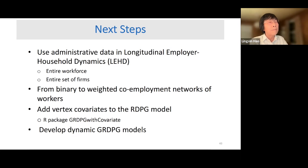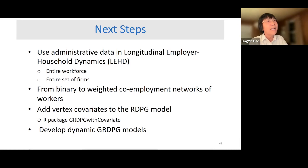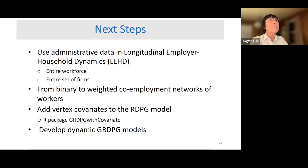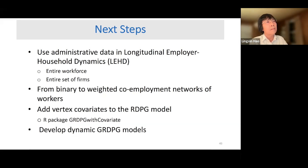Methodologically, there is more work to do. One immediate question is why use a binary network when the co-employment count is non-binary. We binarize for parsimony and because we have the central limit theorem for binary RDPG — the limiting behavior is known. For weighted graphs (e.g., Poisson distribution instead of Bernoulli), we are still working on the theoretical proofs. We also have work on adding vertex covariates to the RDPG, with a published R package called GRDPG with covariates, and we are developing a dynamic GRDPG model to explain how labor market structure changes over time.